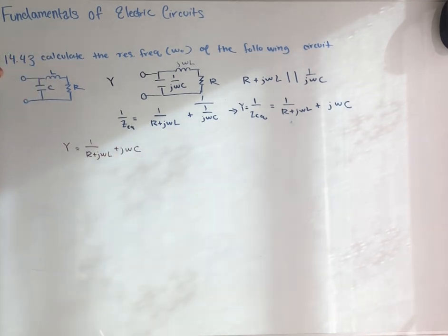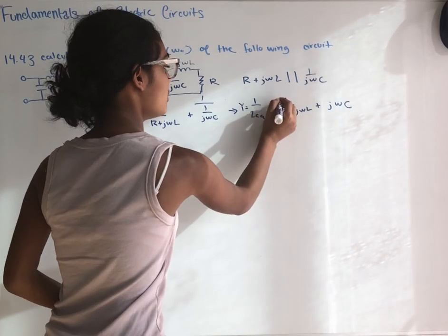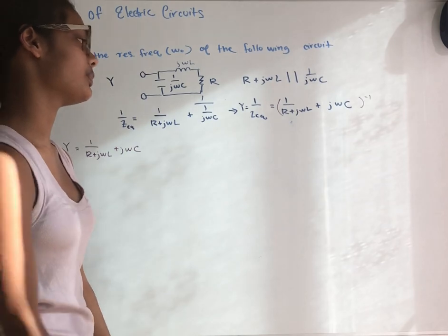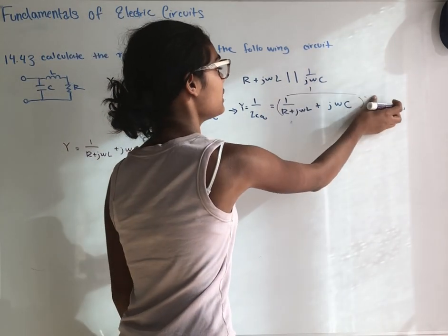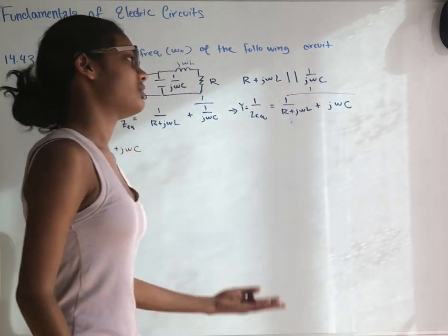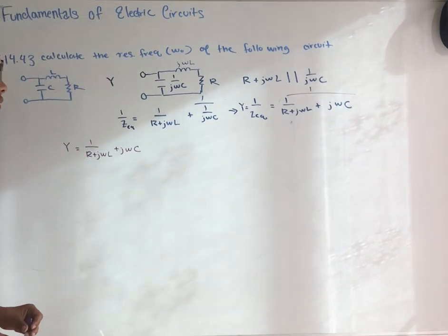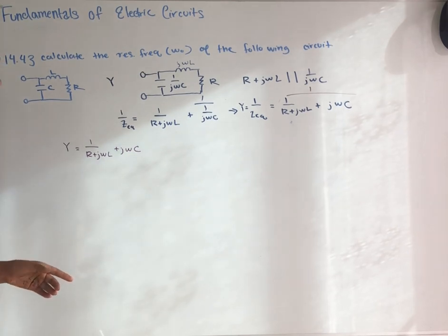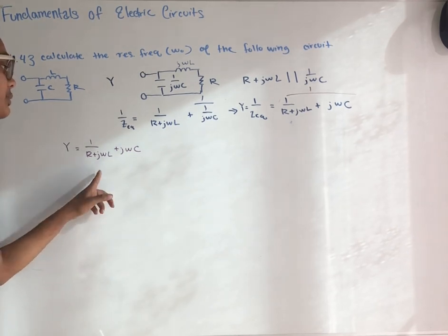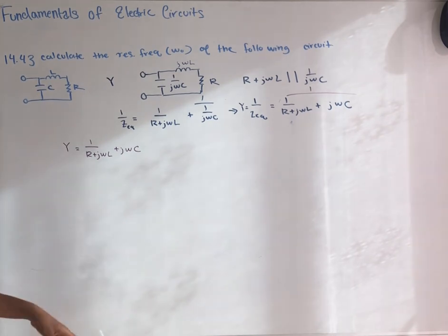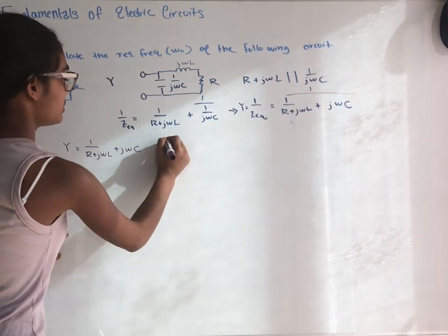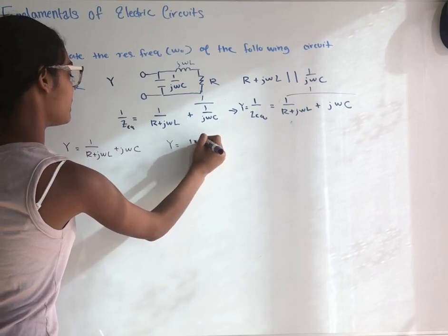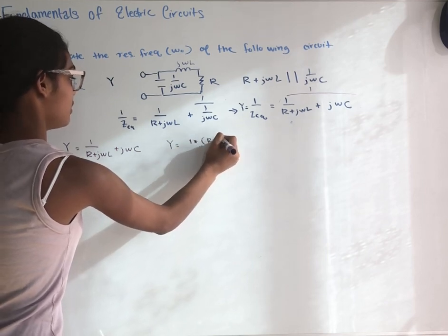This really simplifies our algebra a lot, because if we had to find Z equivalent we would have to raise this to the power of negative one and do a lot of unnecessary algebra. Now we want to set the imaginary part equal to zero to find the critical frequency. Because we have an imaginary number in the denominator, we want to multiply by the complex conjugate. So this equals 1 times (R minus j omega L) over (R plus j omega L)(R minus j omega L), plus j omega C.